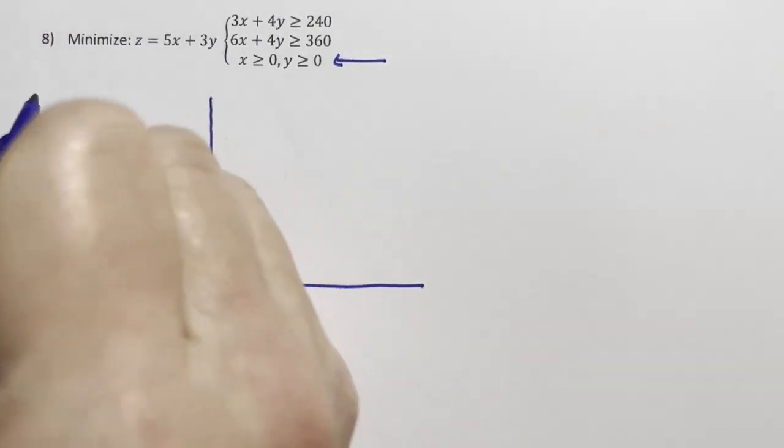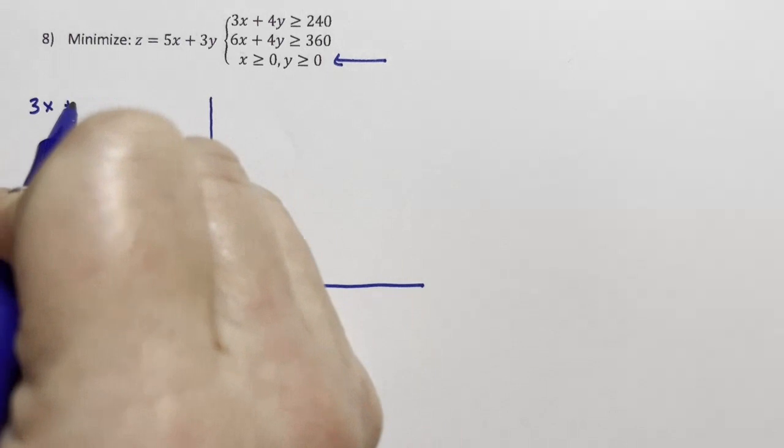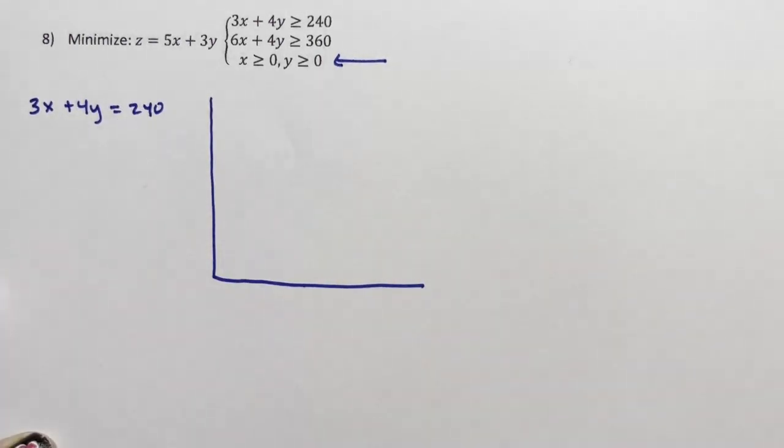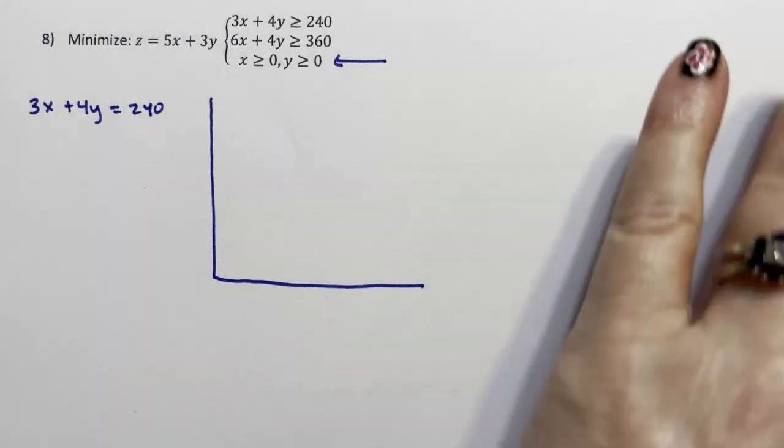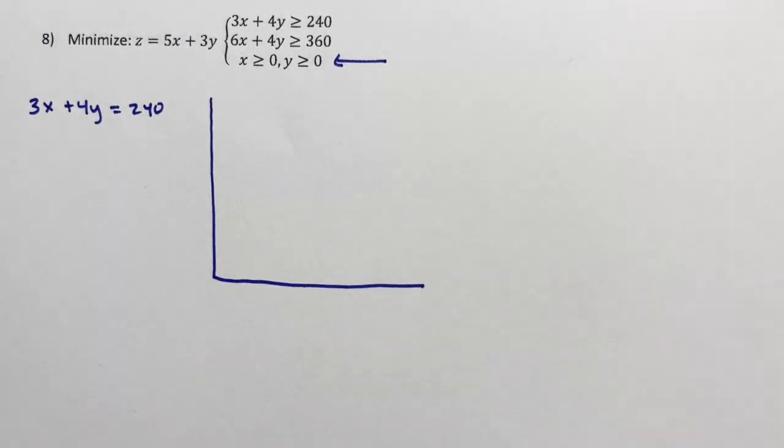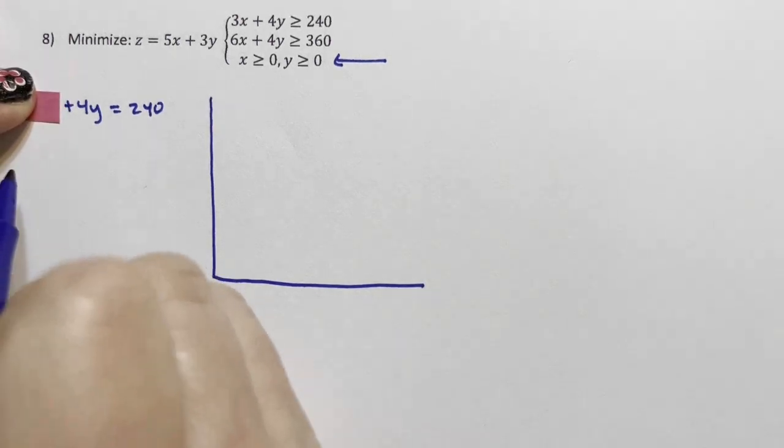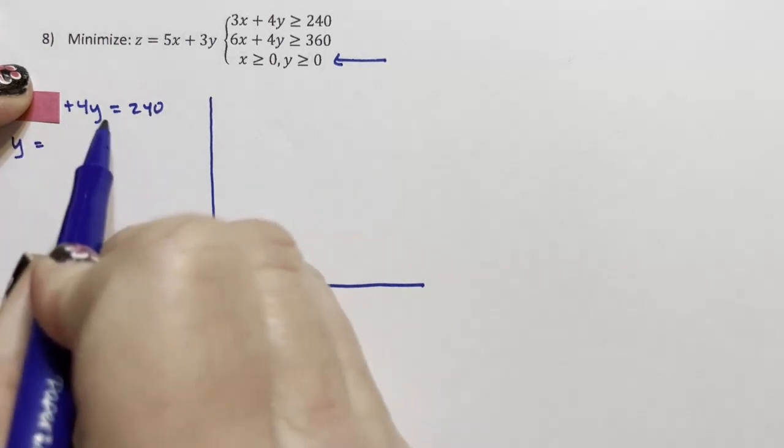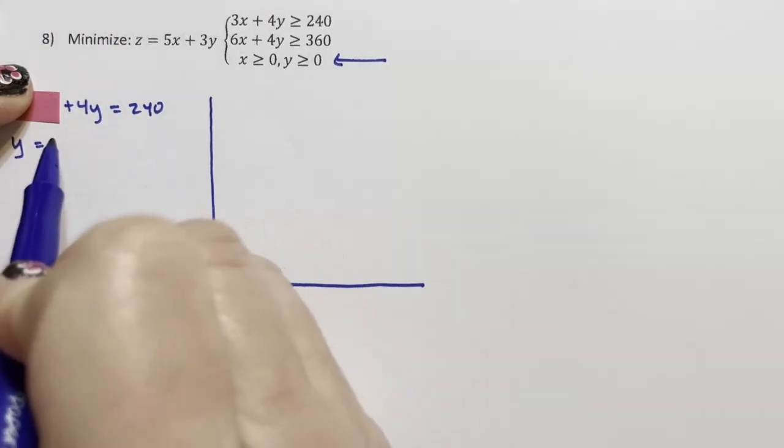We're going to take this 3x plus 4y and we're going to say equals 240 and we're just going to look at the intercepts. So when x is zero, 4y equals 240. We divide both sides by four and y equals 60.